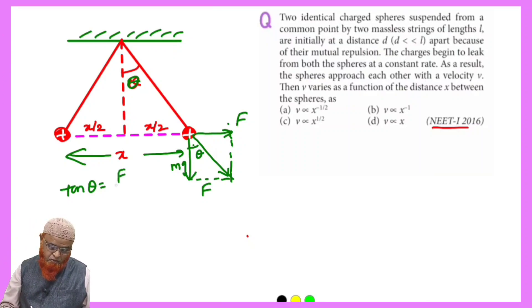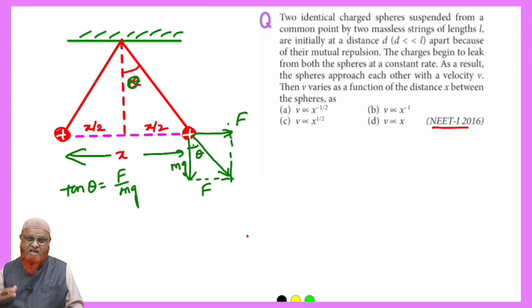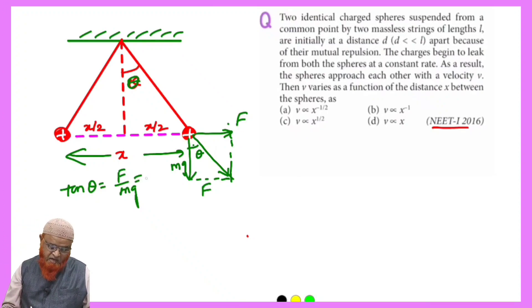Then after that you can write tan theta is equal to F by mg. And you all know that F is nothing but kq₁q₂ by r², but here the distance is x. So we can write q₁q₂ taken as similar charges, so we can write kq² by mg into x².